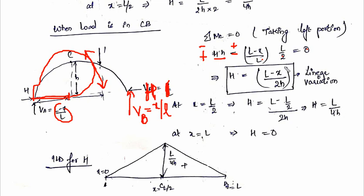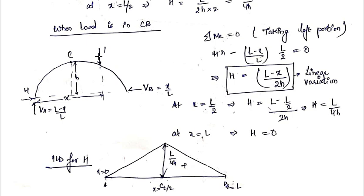The variation of horizontal thrust is linear since x appears to the power of 1. For the CB portion, at C where x equals L/2, H equals L/4h; at B where x equals L, H equals 0. Now plotting all values: for AC, at x=0 H=0, and at x=L/2 H=L/4h; for CB, at x=L/2 H=L/4h, and at x=L H=0. Joining these with straight lines gives the ILD for the horizontal thrust.